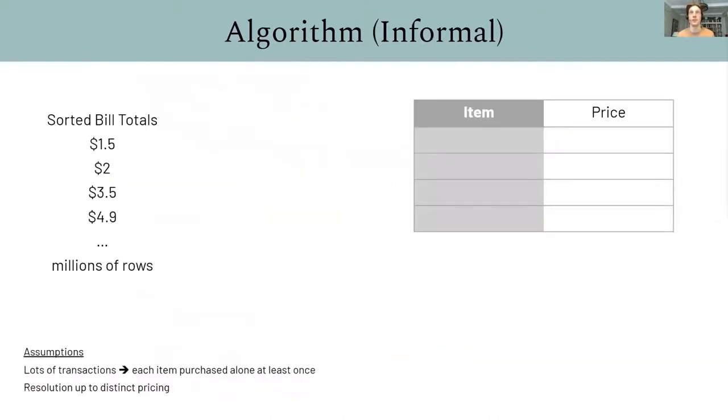I'm going to quickly step through a simplified, informal version of our method just to get some intuition on how we decompose bill totals. The actual algorithm is a little more involved. In the paper, we provide a proof of accuracy under mild assumptions, along with a polynomial time implementation based on approximate subset sum. So, the two key insights that allow us to do inference are, first, if we have enough transactions, like millions of transactions, each product will eventually be purchased alone at least once.